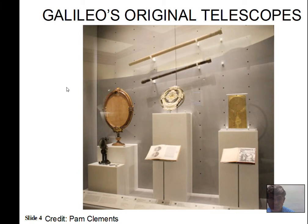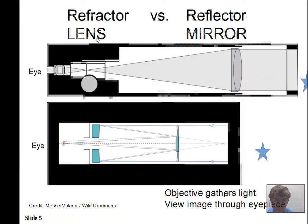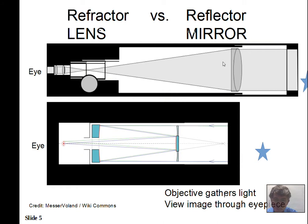Galileo built refracting-type telescopes with a lens at each end for magnification, but the main purpose was to gather light to see dimmer objects. In a refracting telescope, a lens gathers the light. Starlight comes into the tube, the objective lens gathers the light and sends it down to the prime focus. The image isn't viewed there; instead, light continues through an eyepiece that produces a parallel beam comfortable for the eye.